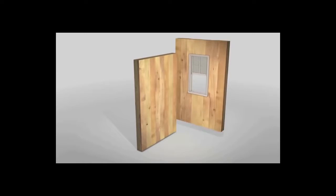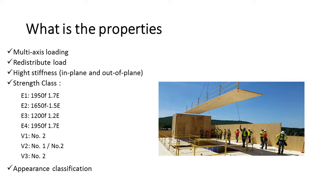Regarding properties, one key property of CLT is multi-axis loading, which can be really useful for two-way slabs. CLT also redistributes loads well to other principal structural elements. Additionally, CLT has high stiffness both in-plane and out-of-plane, which can be very helpful for redistributing shear forces.